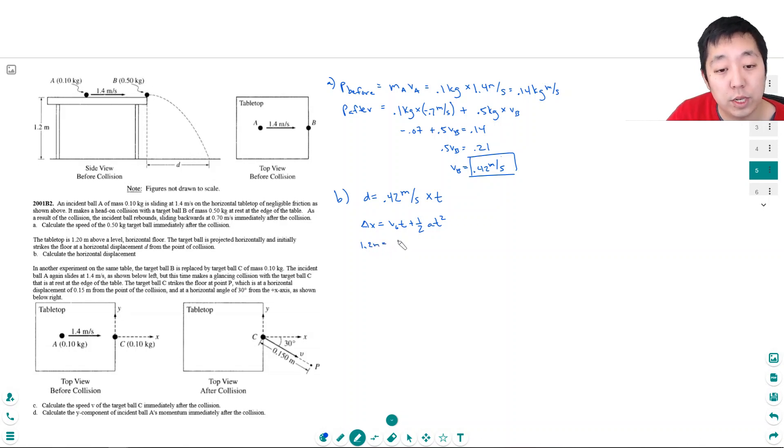Its initial velocity in the vertical direction is zero, and the only acceleration it feels vertically is gravity times t squared. So I multiply by 2: 2.4 meters divided by g, 9.8 meters per second squared equals t squared. I take the square root and get 0.495 seconds. Then I can feed that back: 0.42 times 0.495, I get 0.208 meters. That's how far it traveled.